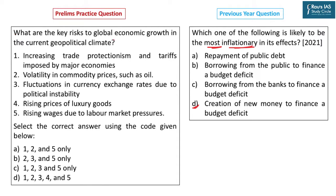What are the key risks to global economic growth in the current geopolitical climate? Increase in trade protectionism, volatility in commodity prices like oil, fluctuations in currency exchange rates, and rising wages — they all affect the input price of production. Rising prices of luxury goods will not influence global economic growth as much, but the other four factors affect the supply side of production.